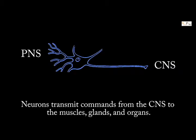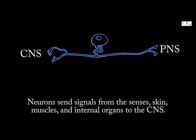When activity occurs, neurons transmit signals from the peripheral nervous system, like the skin, to the central nervous system. Then, through neurons, the central nervous system gives instructions back to the peripheral nervous system.